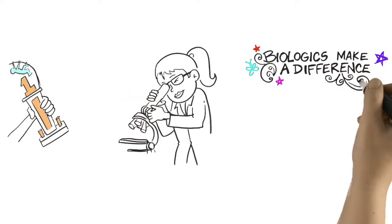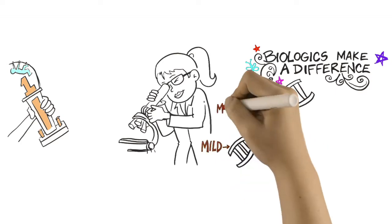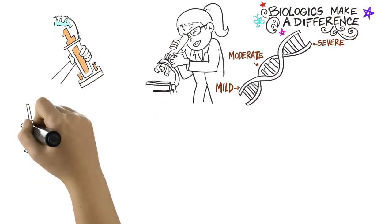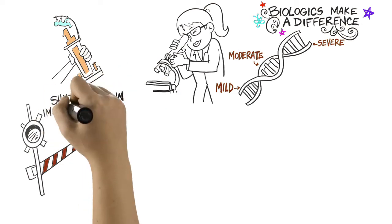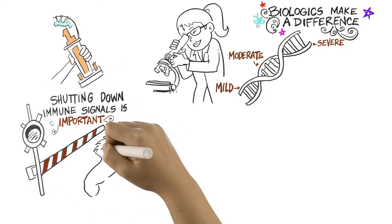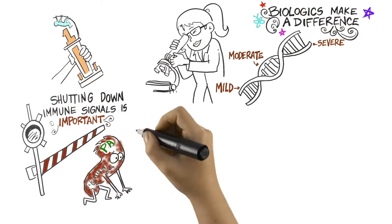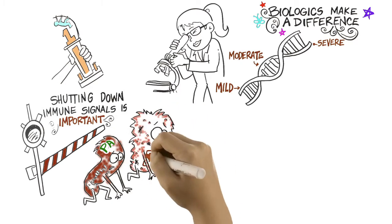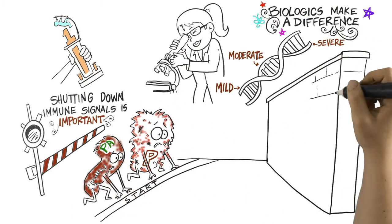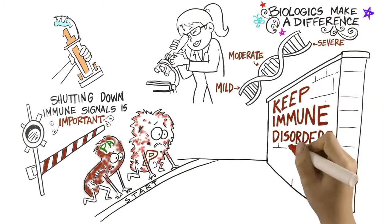They found that there are several genes that cause different forms of psoriasis. And they learned that, just like many other diseases, shutting down immune signals is important. But it would be even better to treat the disease before it spreads, and then come up with the right combination of treatments and lifestyle changes to keep immune disorders in check.